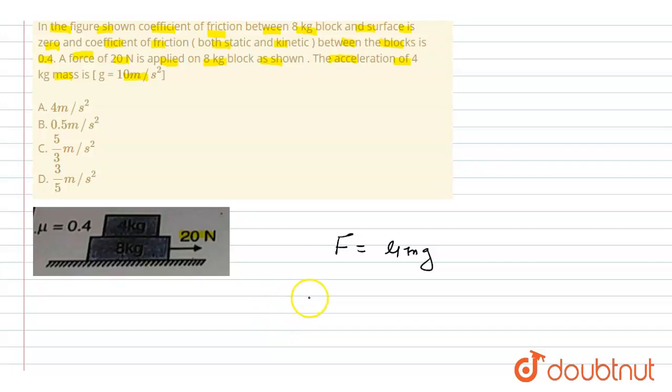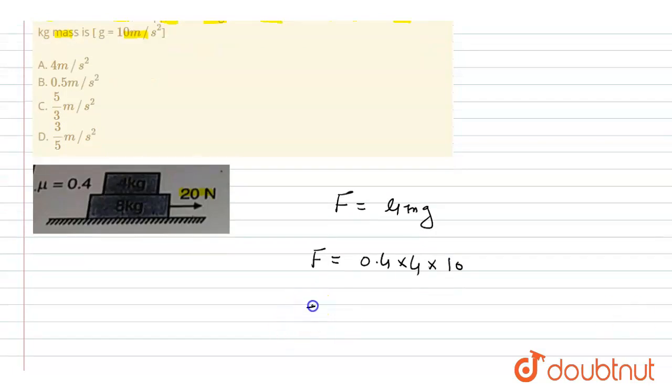From here we can find out the force. F is equal to the value of μ, which is 0.4, and mass is 4 kg, and acceleration due to gravity g is 10. If I simplify this, then the force is equal to 16 newton.